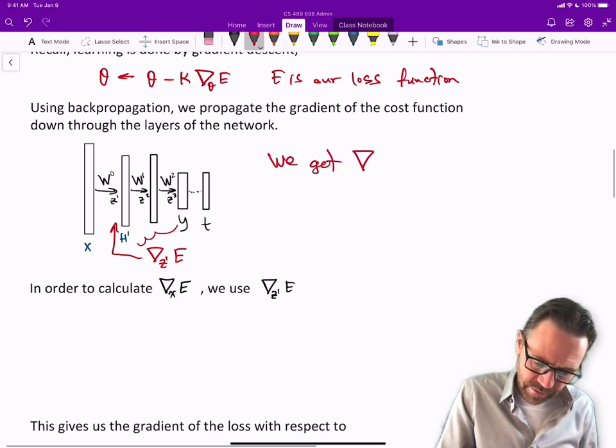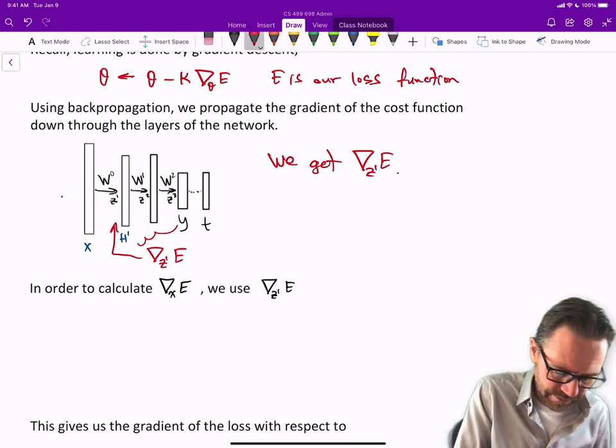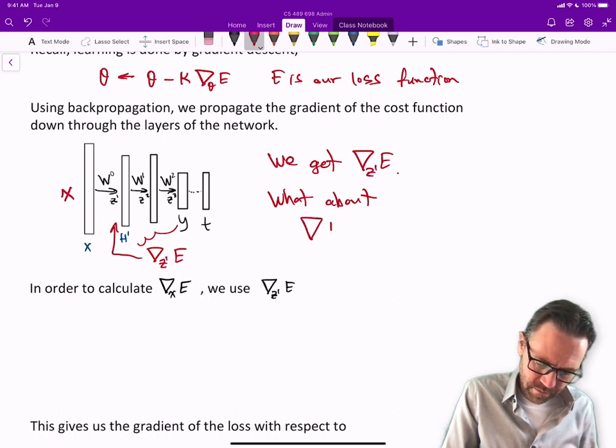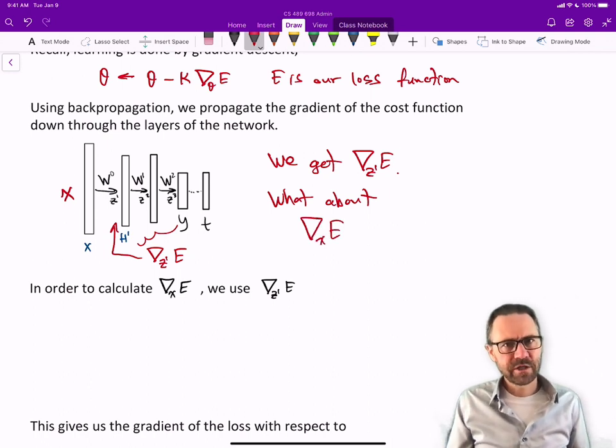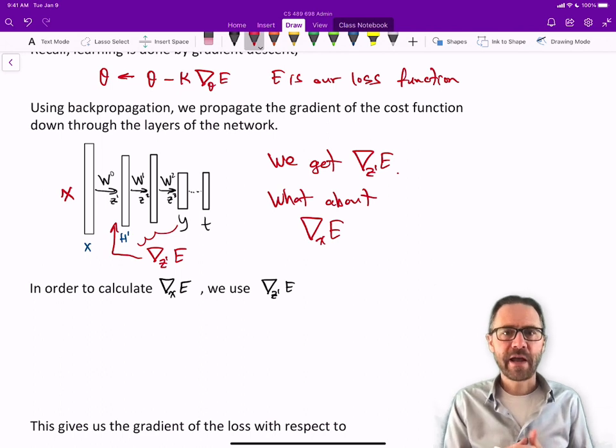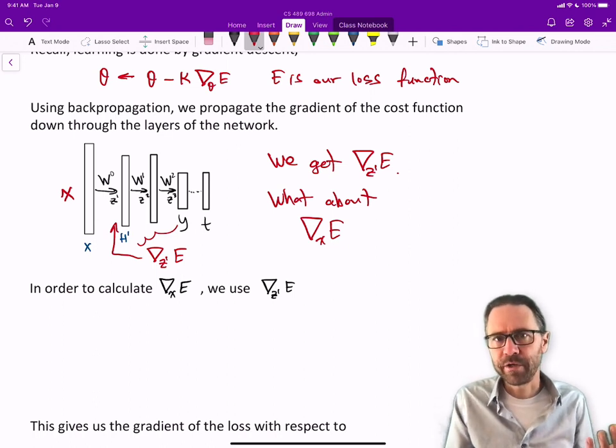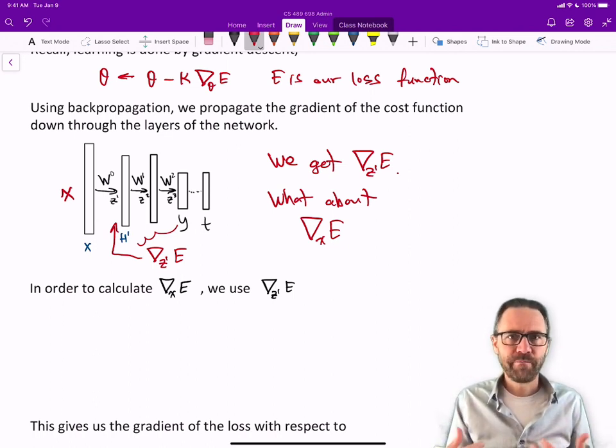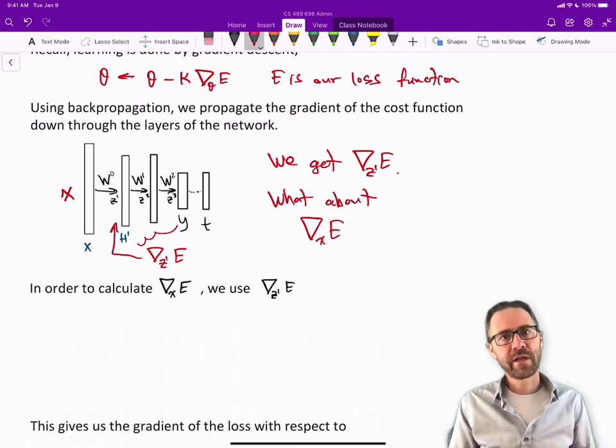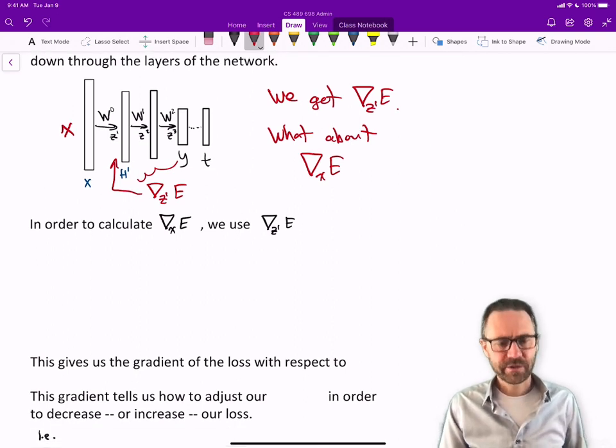What about the gradient of E with respect to x, the input here? We haven't talked about this before, but it's an interesting idea. Can we push the gradient all the way down to the input and ask ourselves how would we change the input? Normally when training you don't choose the input, but we can ask how would we change our input to increase or decrease the loss, and this gradient will tell us that.